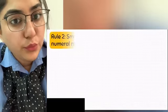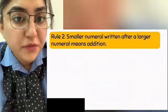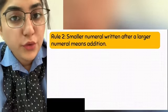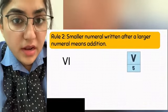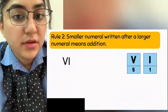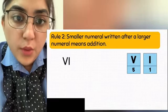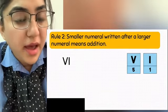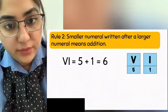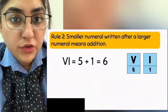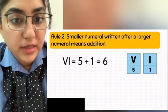Rule 2 states that a smaller numeral written after a larger numeral means addition. For example, VI: V is the larger number and I is the smaller number, so we add them. V means 5 and I means 1, so 5 plus 1 equals 6. That is rule 2 — a smaller numeral written after a larger numeral means addition.